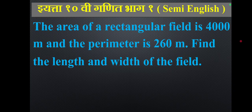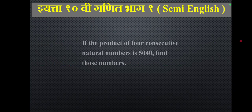The area of a rectangular field is 4000 m² and its perimeter is 260 m. Find the length and width of the field.